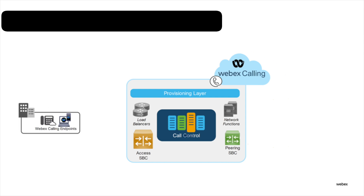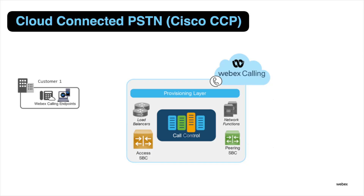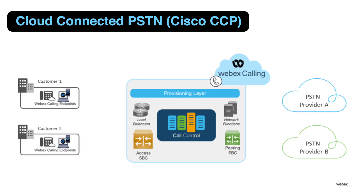Now let's talk about the different PSTN options available with WebEx Calling. The first is Cisco Calling Plans, or Cisco PSTN. This option bundles PSTN connectivity with WebEx Calling into a single service, providing customers with a complete enterprise phone system delivered by a single vendor. There's only one point of administration — you can order, port, and provision PSTN numbers directly from Control Hub. Cisco has set up shared SIP integration with a few cloud-connected PSTN, or CCP, providers. An inbound call goes from the customer site over the top to the Access SBC, and the peering SBC connects to the PSTN provider over a SIP trunk connection.